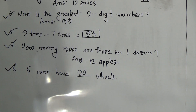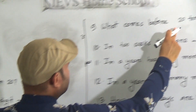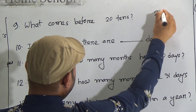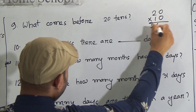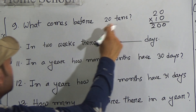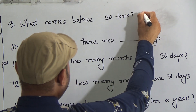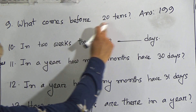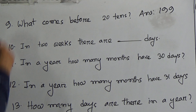Question number 9: what comes before 20 tens? 20 tens means 20 multiply by 10, so 20 tens are 200. Then what comes before 200? It will be 199. So what comes before 20 tens? The answer is 199.